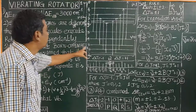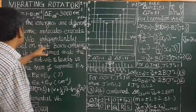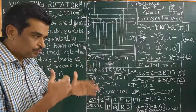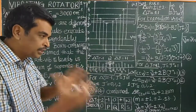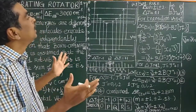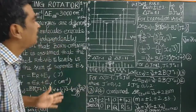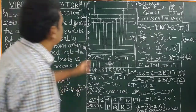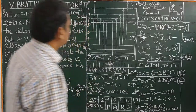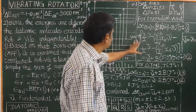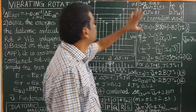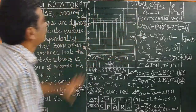Assuming the Born-Oppenheimer approximation, rotation and vibration execute independently. These are the rotational energy levels for V equal to 0 and V equal to 1 — the vibrational energy levels.